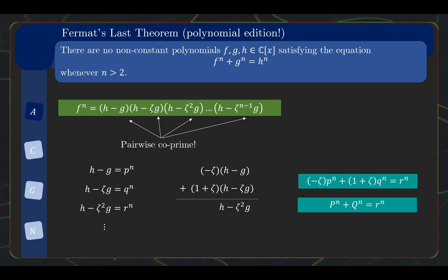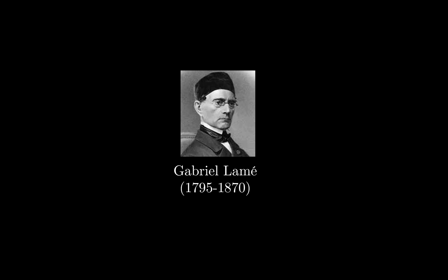Except now, p and q are sort of the nth roots of our previous polynomials, so the degrees are definitely smaller. This contradicts our earlier assumption about the minimal degrees. So, now back to Lamé.